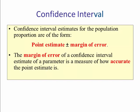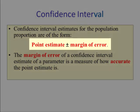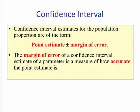Confidence interval estimates for population proportion are in the form point estimate plus or minus margin of error. The margin of error of a confidence interval estimate of a parameter is a measure of how accurate the point estimate is. The smaller the margin of error, the better the confidence interval.